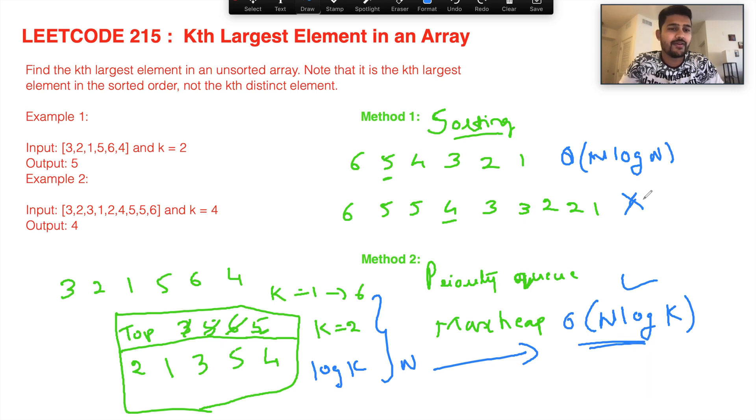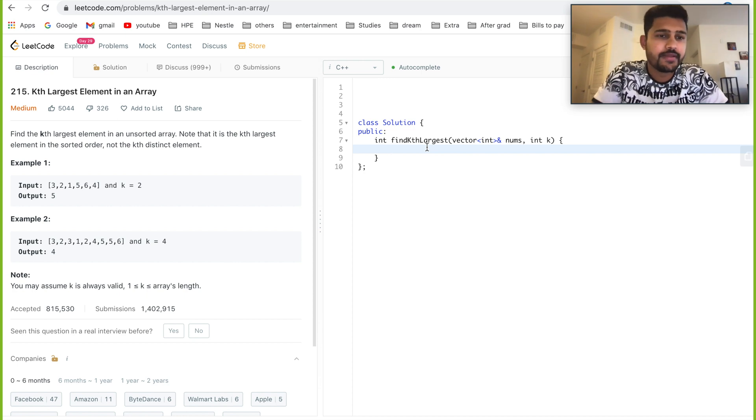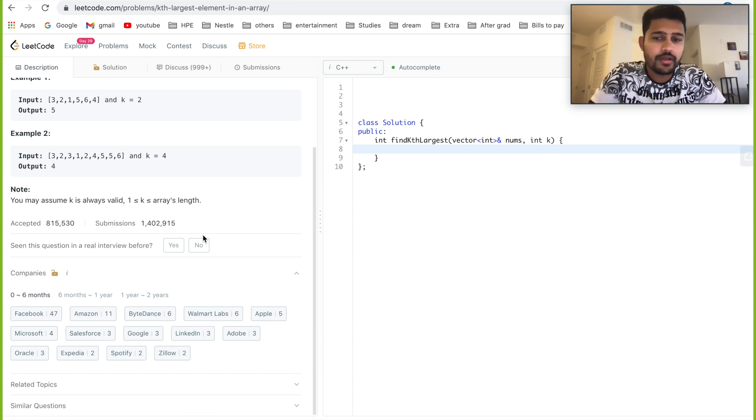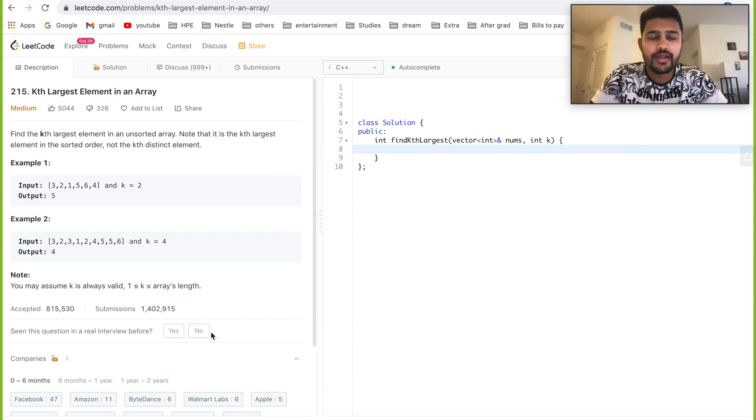As I've already explained the logic for the problem Kth Largest Element in an Array, I'll quickly write the code for this problem. Before that, as you can see, it's a medium level problem and it's been asked in multiple FAANG level companies, which is Apple, Amazon, Facebook, Microsoft, Google. So yeah, it's one of the pretty important problems. As you have already seen, I have explained the concept of priority queue. We'll be using that to solve this problem.